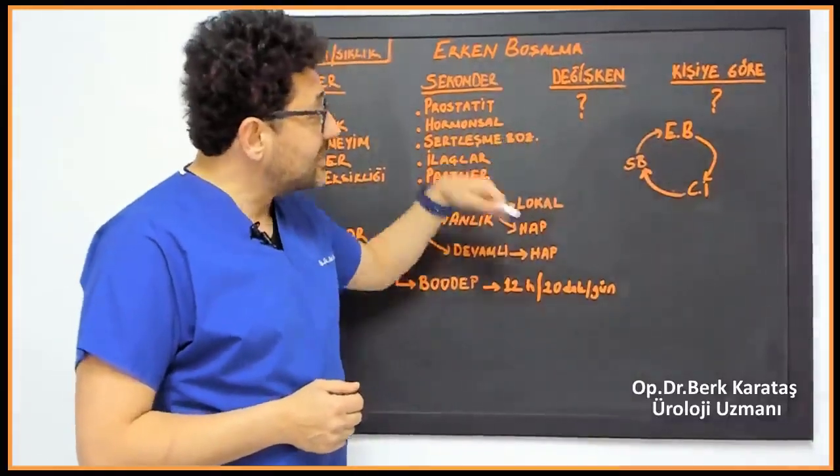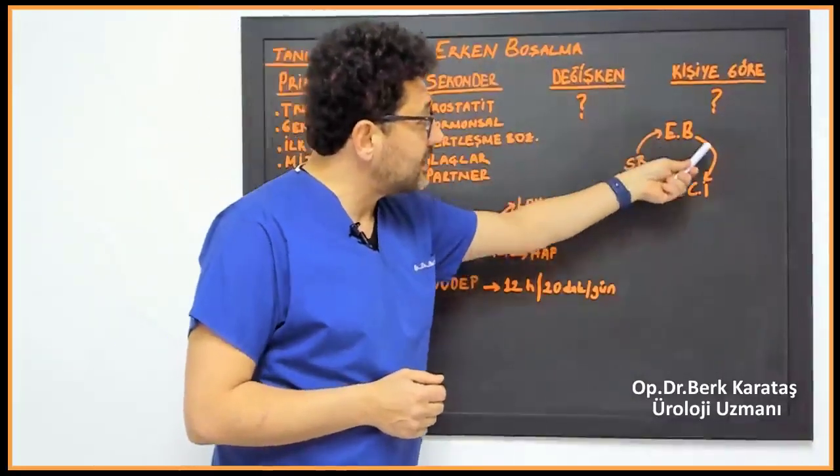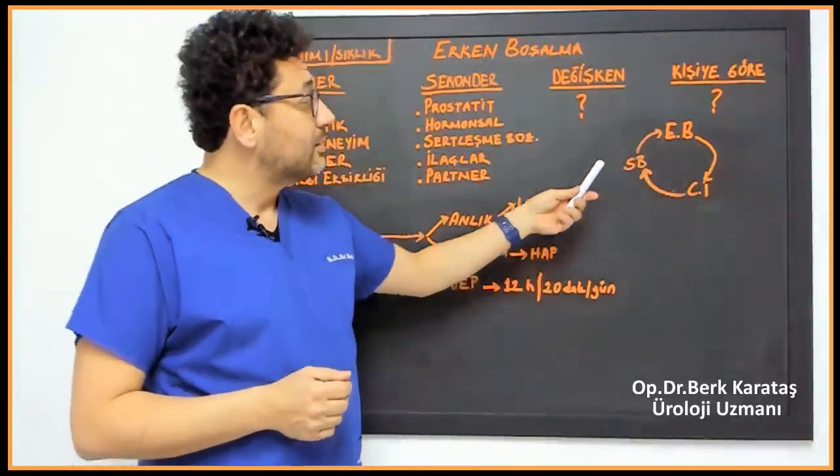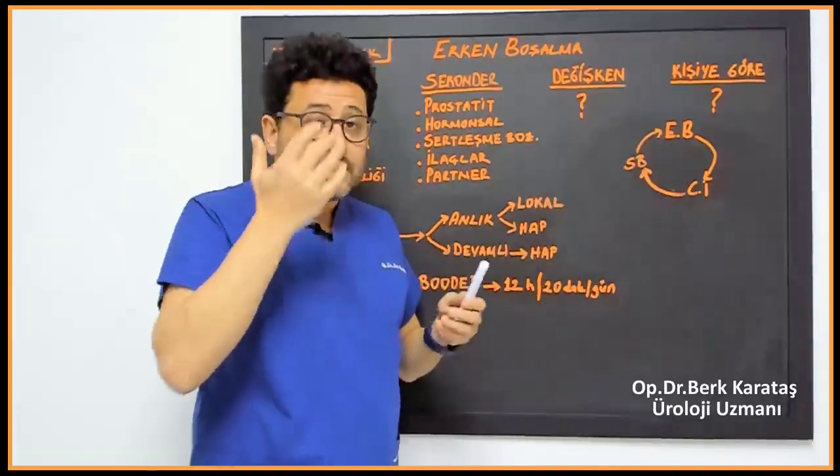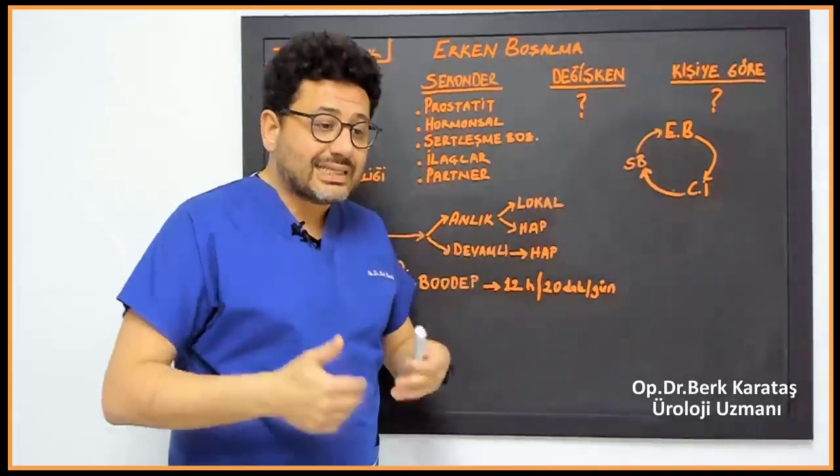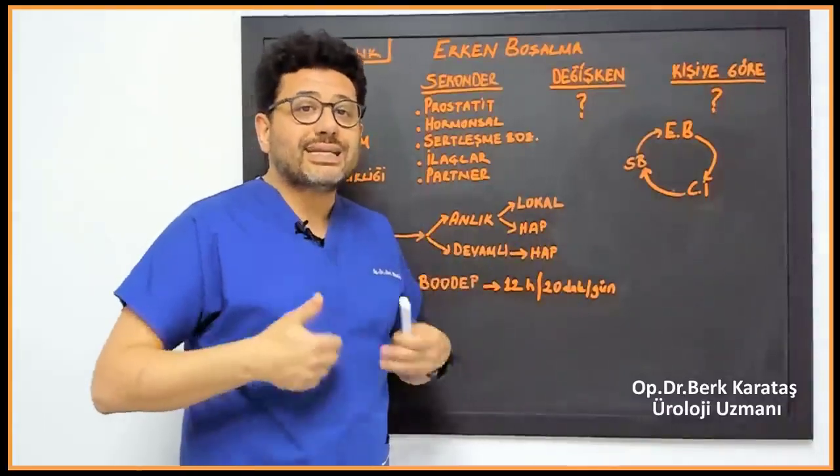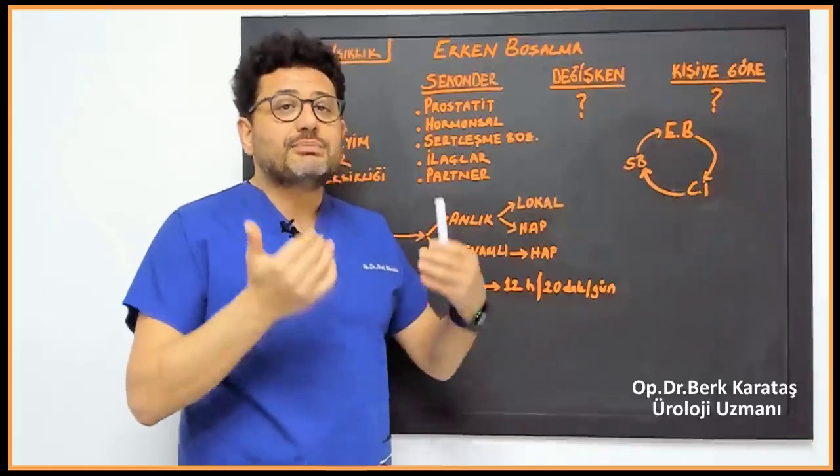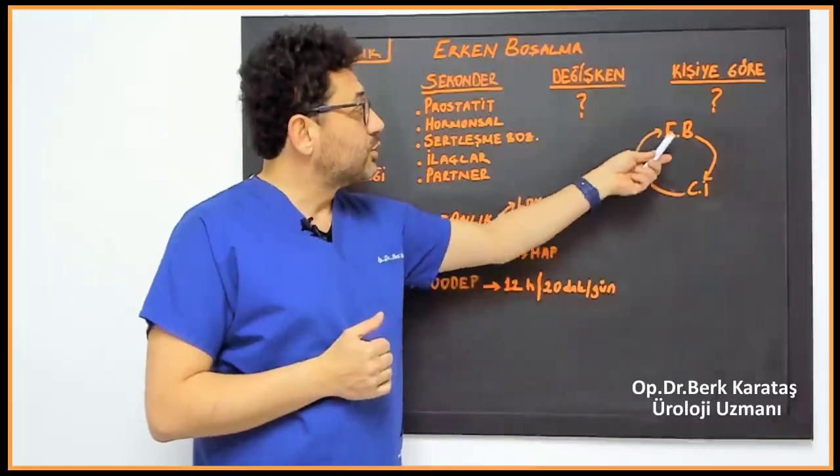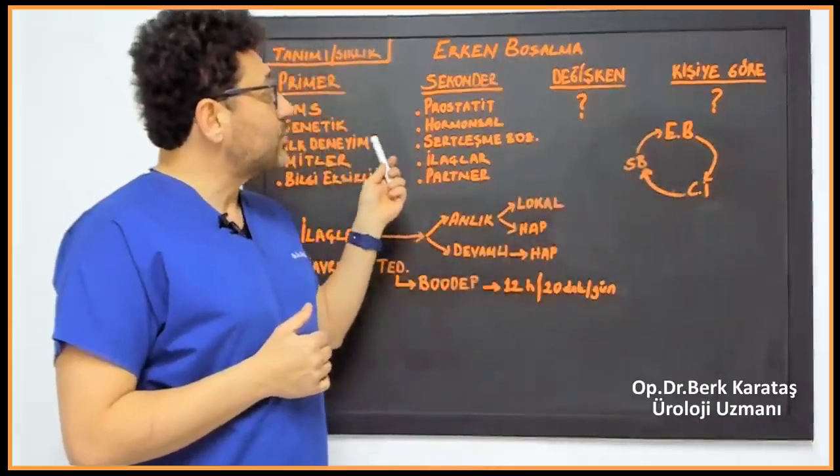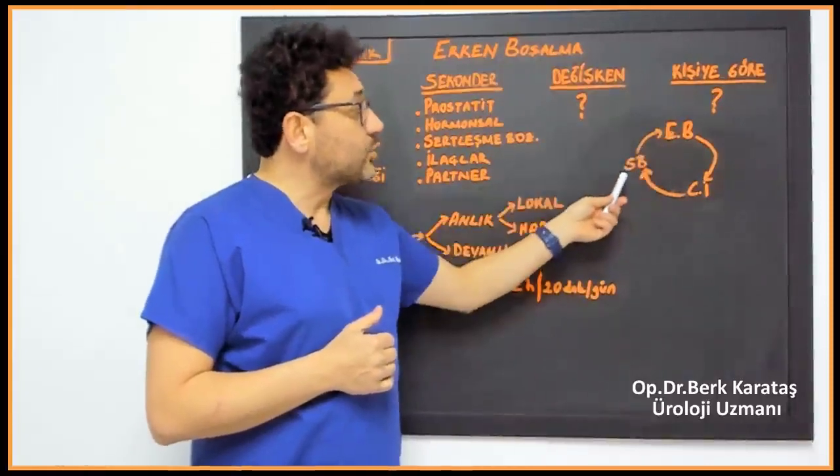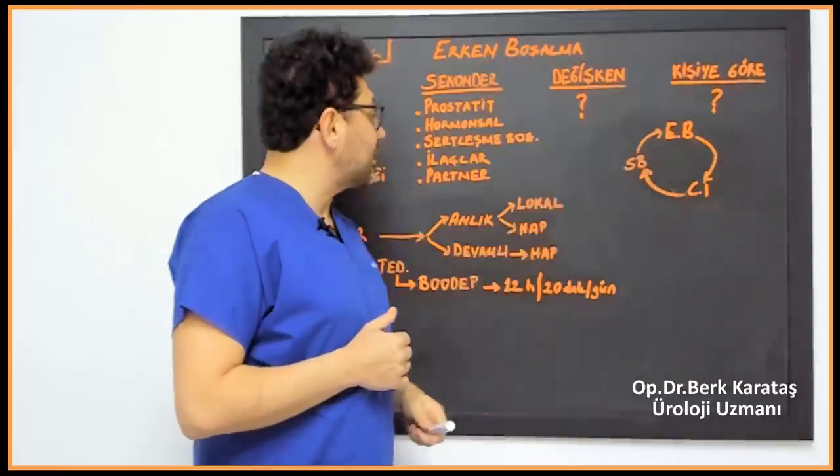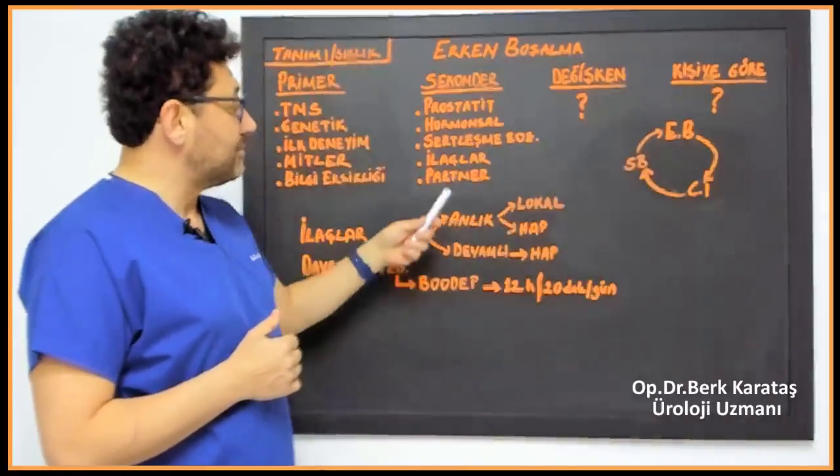It can also be the opposite, starting with erectile dysfunction and coming to premature ejaculation. What happens here is that since it is difficult for the person to maintain the hardness in the vagina, he thinks that he should ejaculate as soon as possible, at least not lose my hardness. Therefore, there is actually no premature ejaculation, but the person begins to ejaculate prematurely, although the main problem is stiffness.